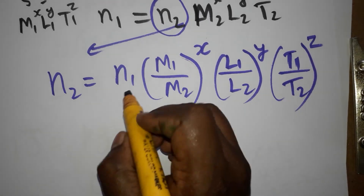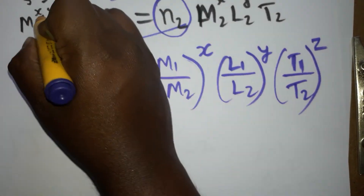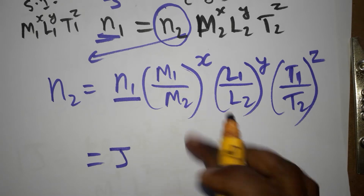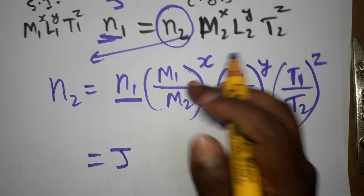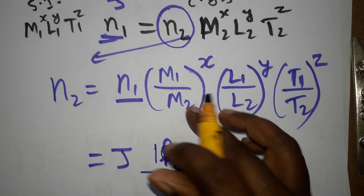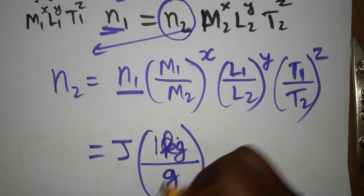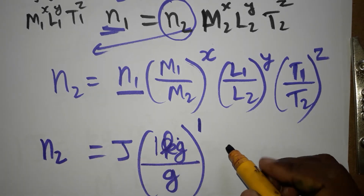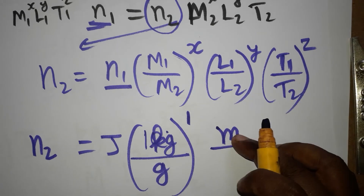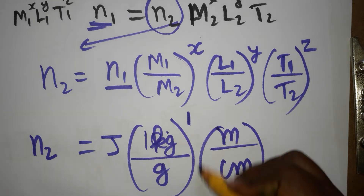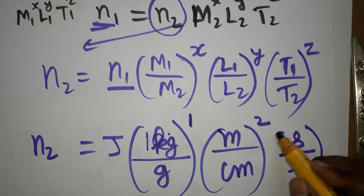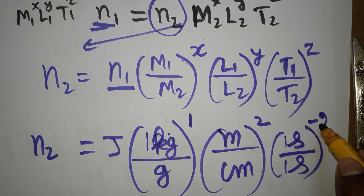Here n1 is in terms of Joules following the SI system, so n1 = 1 Joule. m1 is the SI unit mass: kg. m2 follows the CGS system: gram. The x value is 1. l1 is in terms of meter, l2 is in terms of centimeter, with power y = 2. t1 is second and t2 is also second, with power z = −2.